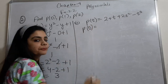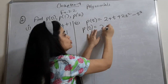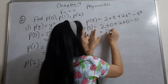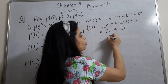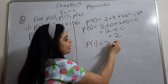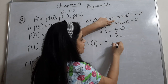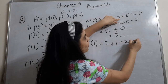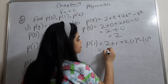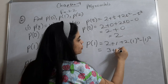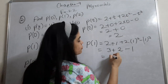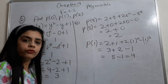Now second part: finding p(0) means put 0 in place of t. So 0² plus 0 plus 2 into 0 minus 0, which gives 2. Now p(1): put t = 1. So 1 plus 2, that's 3, plus 2 minus 1 is 1. So 3 plus 2 is 5 minus 1, which is 4.